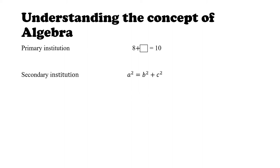Then we go to the secondary institution and we start to see things like A squared equals B squared plus C squared. I want you to notice that between primary school and secondary school there is something in common — there is something unknown. In the primary case, we only have the box; we know what 8 and 10 are. At secondary level we have A, B, C — and it's like, oh my goodness, what is ABC? Let's call them unknowns for now.